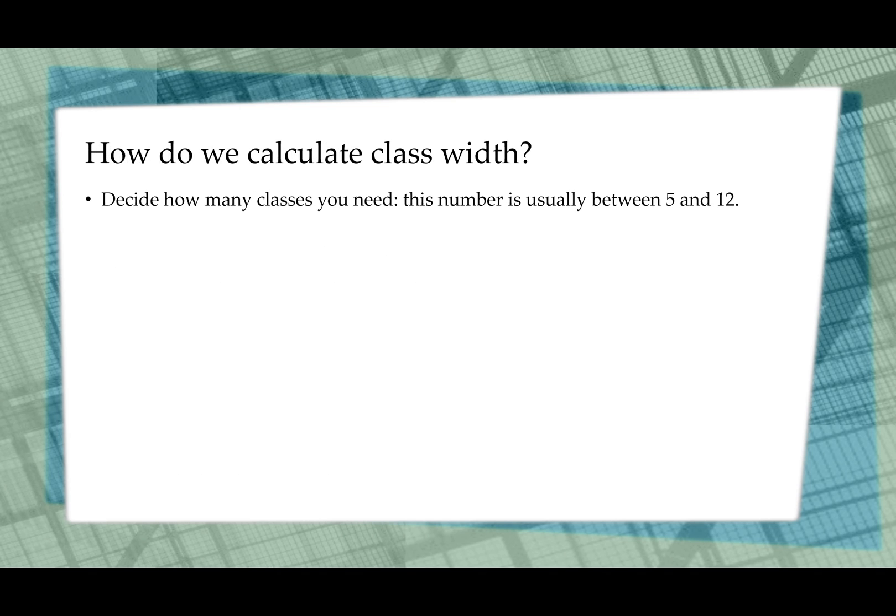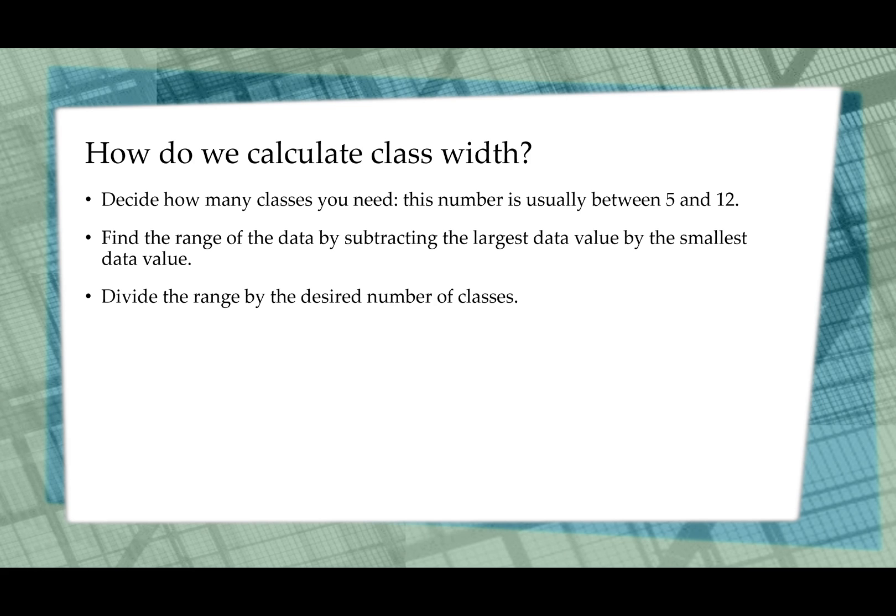How do we calculate the class width? First, you need to decide how many classes you need. Usually, the number is between 5 and 12. If you have fewer than 5, then you're not really going to give too much information about your data. And if you give more than 12, you're going to give an overwhelming amount of information about your data. Find the range of the data by subtracting the largest data value by the smallest data value. Divide the range by the desired number of classes.